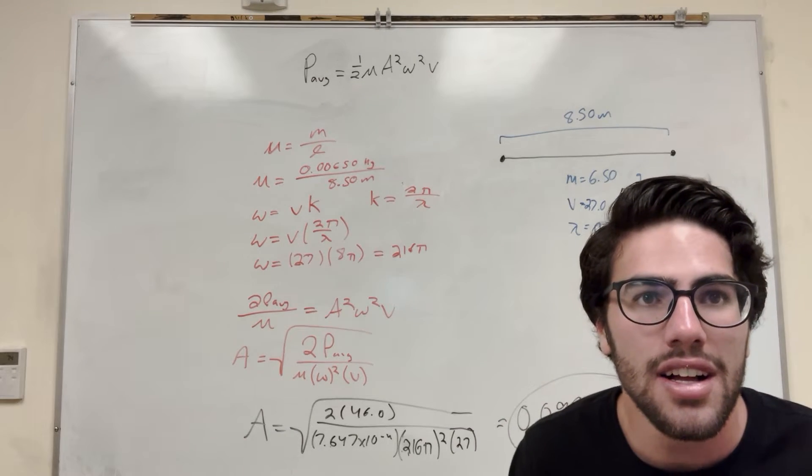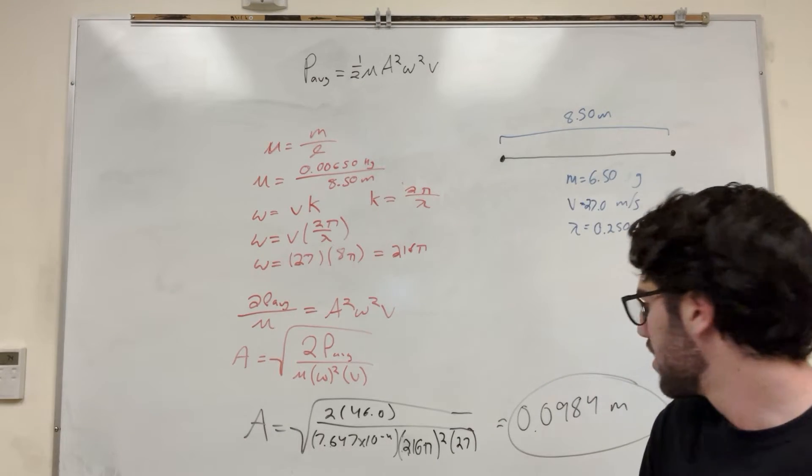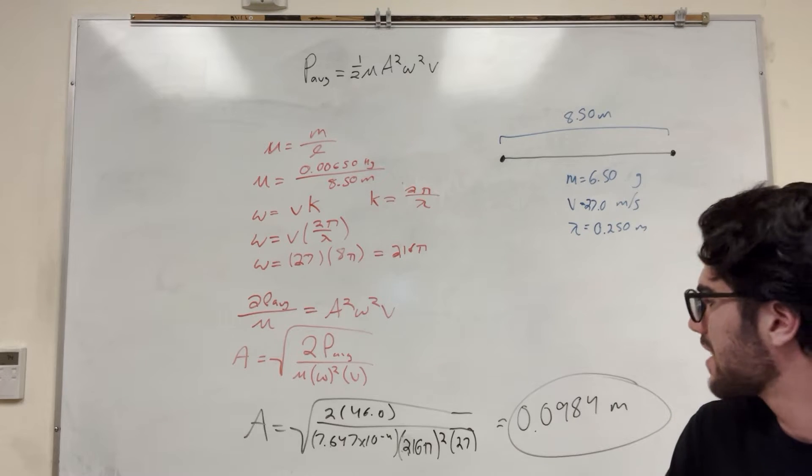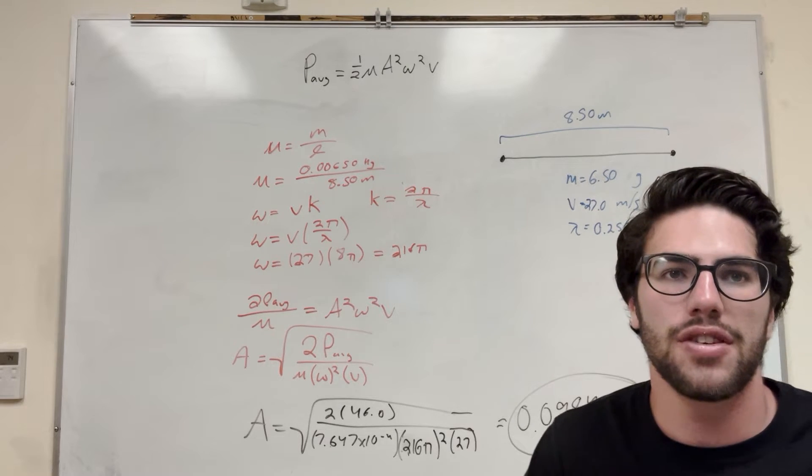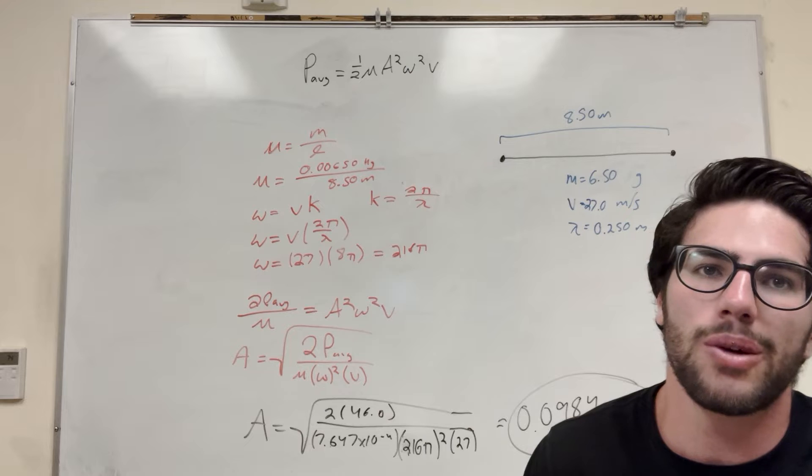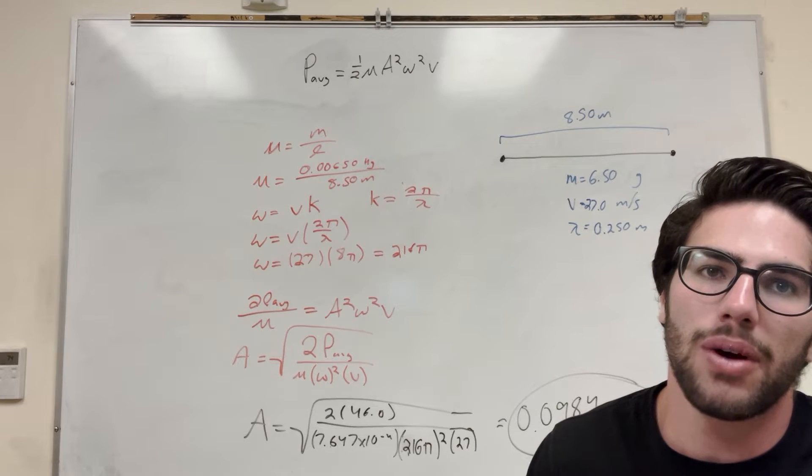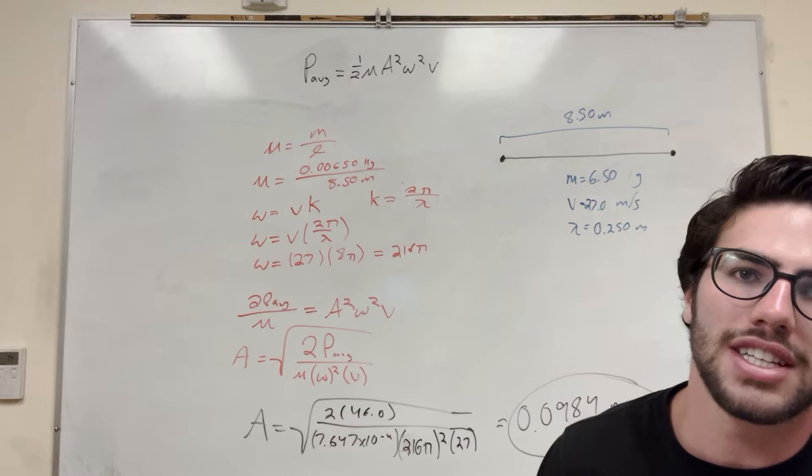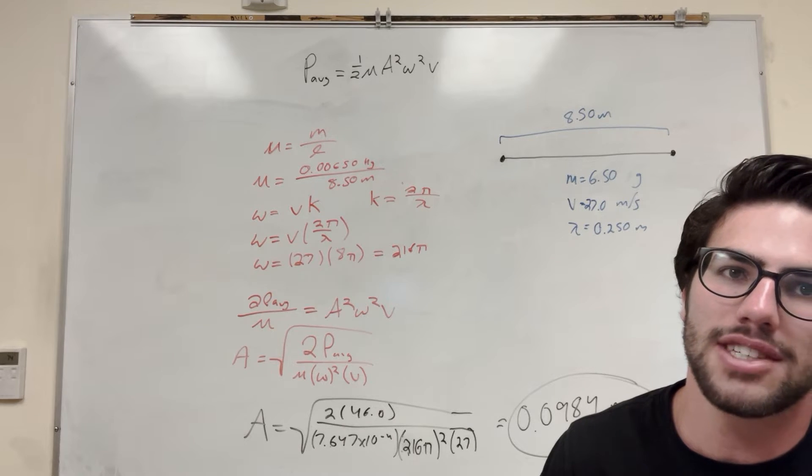Boom! There it is. That's how you solve it. So part A is that. Now part B, for the same string, if the amplitude and wavelength are the same as part A, what is the average power for the wave if the tension is increased such that the wave speed is doubled?